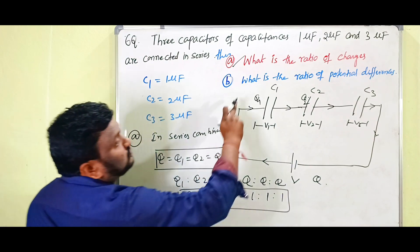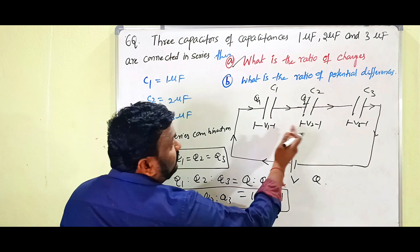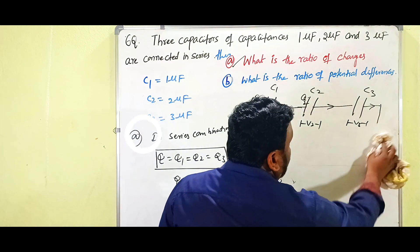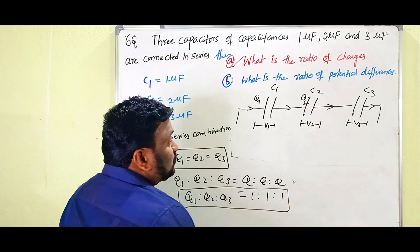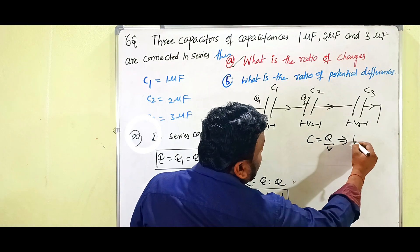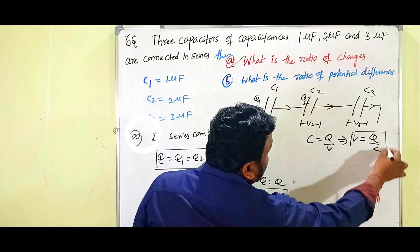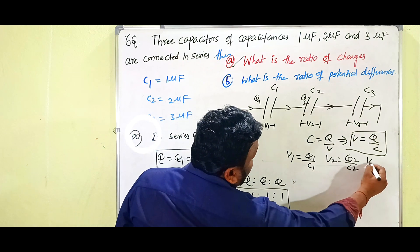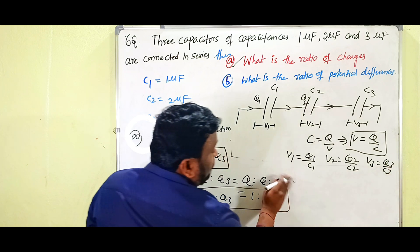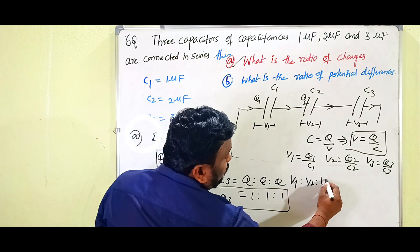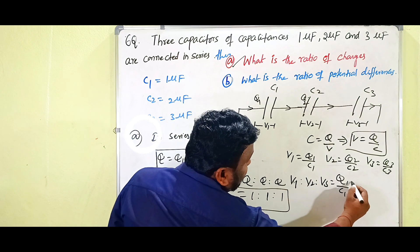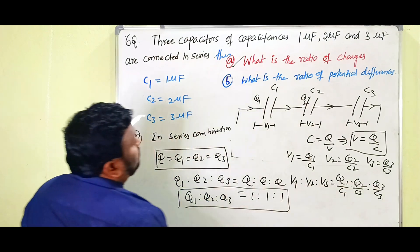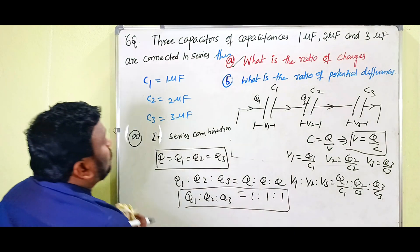Next, what is the ratio of potential differences? We need to find V1 : V2 : V3. We know that C = Q/V, so V = Q/C. Therefore V1 = Q1/C1, V2 = Q2/C2, and V3 = Q3/C3. So V1 : V2 : V3 = Q1/C1 : Q2/C2 : Q3/C3. Since Q1, Q2, Q3 are all equal to Q, we can substitute.